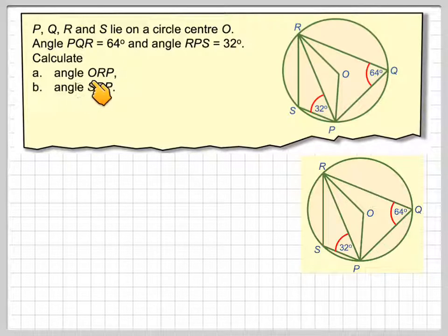So we've got angle ORP. The angle ORP is this angle here. You need to identify the angle that you need to find. If you draw this in here, then you can calculate this angle here.